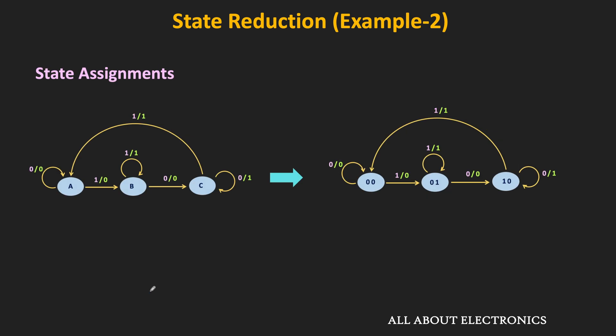Now after the state reduction, since we have 3 states, to represent 3 states we require at least 2 bits. Let's say the A state corresponds to 00, the B state corresponds to 01, and the C state corresponds to 10. In this way, from the state table we can find the equivalent states and eliminate any redundant states in the state diagram. In the next video, we will see what steps we need to follow to design any finite state machine or sequential circuit, and we will understand that by taking a couple of examples.